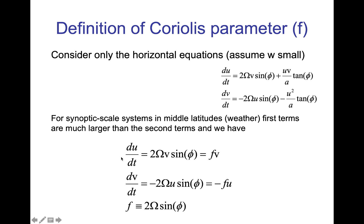We get the Coriolis acceleration in the x or u direction equal to fv, and the Coriolis acceleration in the v or y or meridional direction equal to minus fu, where f is defined to be 2 omega sine latitude.